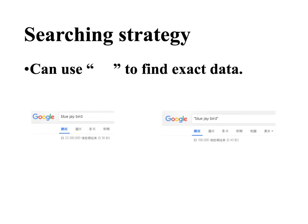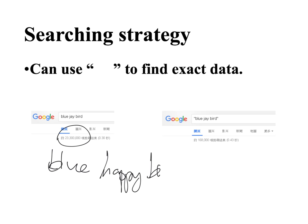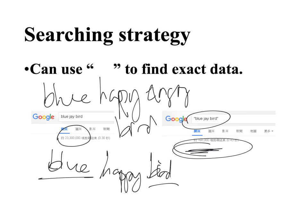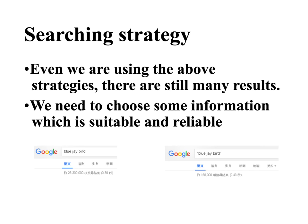We also have another skill — we can use double quotes. Without quotes, a search for 'blue jay bird' might also return results like 'blue happy bird' or 'blue angry bird,' because the search engine matches any of those individual words. If you use double quotes around 'blue jay bird,' you get much fewer, more specific results that match the exact phrase.